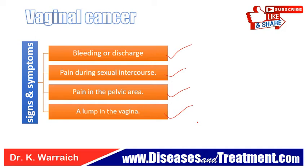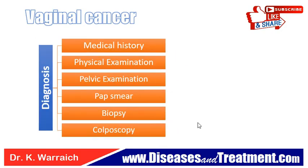Doctors diagnose vaginal cancer using medical history, physical examination, pelvic examination, Pap smear, biopsy, and colposcopy. Tests that examine the vagina and other organs in the pelvis are used to detect and diagnose vaginal cancer. The physical examination checks general signs of health, including checking for lumps or anything unusual, and a history of the patient's health habits, past illnesses, and treatments is also taken.